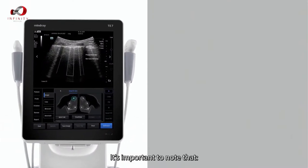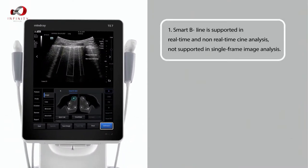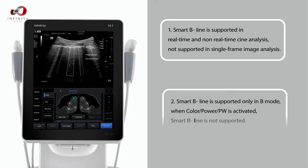It's important to note that Smart B-line is supported in real-time and non-real-time zoning analysis, but not supported in single-frame image analysis. Smart B-line is supported only in B-mode. When color, power, or PW is activated, Smart B-line is not supported.